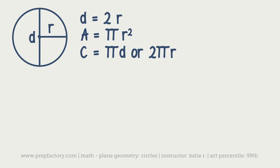Pi d and 2 pi r are the exact same thing because d and 2r are the same. It just depends on what they give you. If they give you diameter, just multiply by pi. If they give you radius, multiply by 2 and pi at the same time. A note on pi: don't put pi into your calculator — keep it as is, unless they tell you to use 3.14 for pi, because pi will always cross out or appear in the answer choices. Those are our two big formulas for circles.